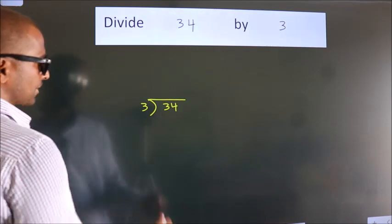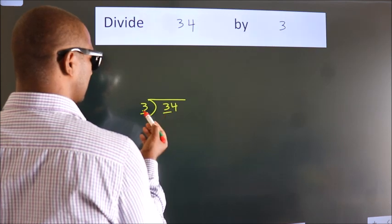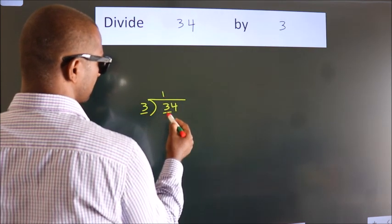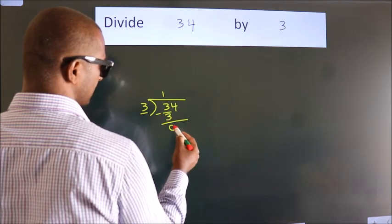Next. Here we have 3. Here 3. When do we get 3? In 3 table. 3 once, 3. Now we should subtract. We get 0.